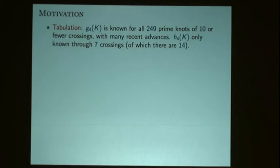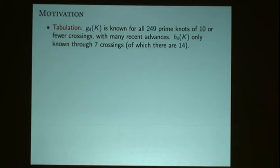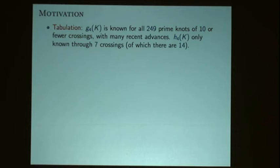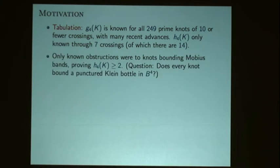One reason I got into looking at this is that I've been tabulating lots of knot invariants, and there's been lots of progress with the four-genus. For example, if you look through the table of knots up through ten crossings, the four-genus is completely resolved now. But in the non-orientable setting, basically only the simplest examples were known — I could only find fourteen.